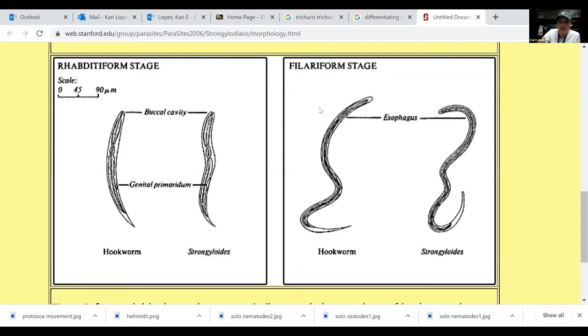And then in your filariform stage or infective stage, here's your hookworm. So remember which one looks like a hook? If that one has a notch tail and this one has a sharp pointy tail, which one actually resembles a hook? Wouldn't it be the hookworm because it's sharp? Yeah, so your hookworm has the pointy tail just like Captain Hook has his little pointy hand. It has the tail that points at the end.